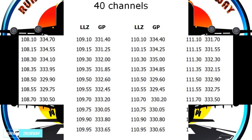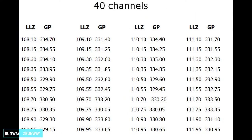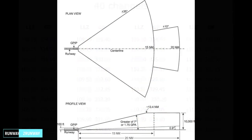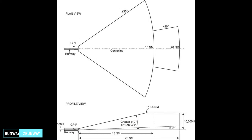If you are in the localizer signal, you can be able to use the glide path signal to the UHF band. I have a channel that is in a localizer signal, and it is automatically automated. If you have a plan view and profile view, I will show you that the localizer signal is about 15 degrees, and also about 25 degrees.